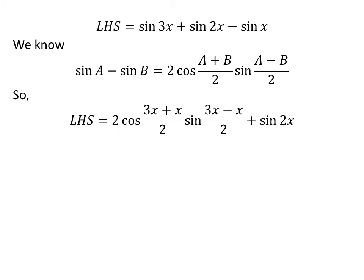Applying the above identity to sine of 3x minus sine of x, the left-hand side of the equation becomes 2 times cosine of (3x+x)/2 times sine of (3x−x)/2 plus sine of 2x.